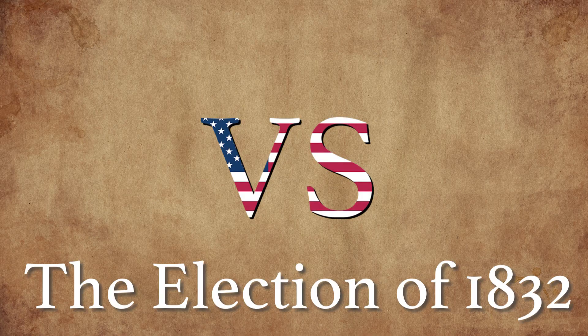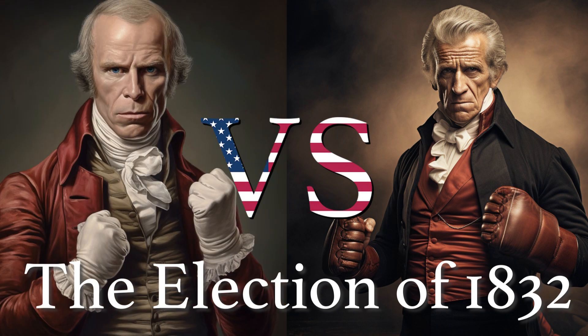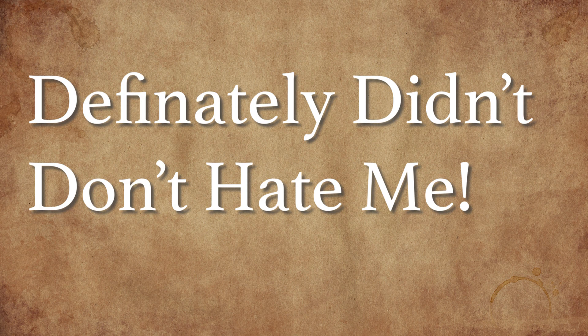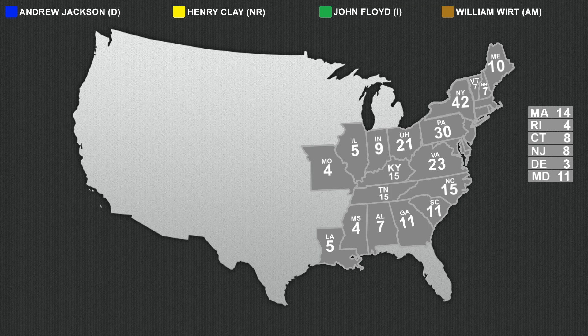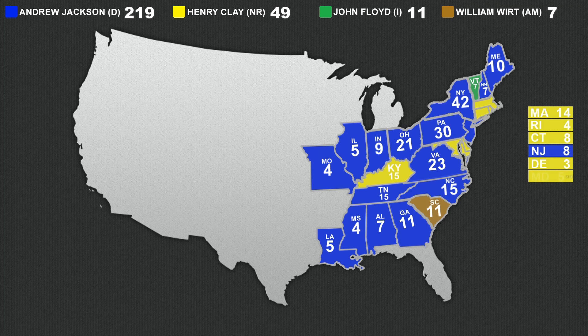The election of 1832: Andrew Jackson vs. Henry Clay, and also William Wirt of the Anti-Masonic Party. Jackson easily won re-election against Clay, winning 219 of the 286 electoral votes cast. John Floyd, who was not an actual candidate, received the electoral votes of South Carolina. This was the first national election for Martin Van Buren of New York, who was put on the ticket to succeed John C. Calhoun as VP. Van Buren faced opposition within his own party for the vice presidency, and as a result, all 30 Pennsylvania electors cast ballots for native son William Wilkins.